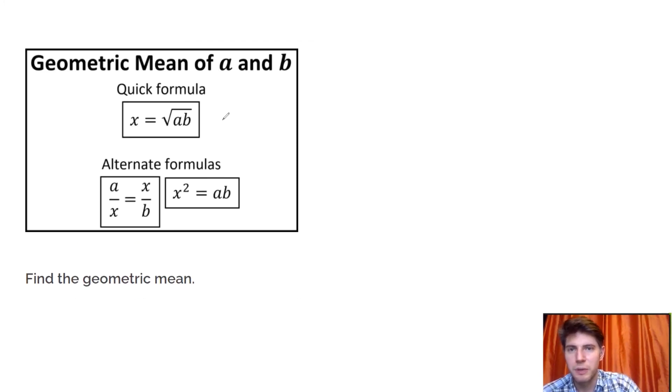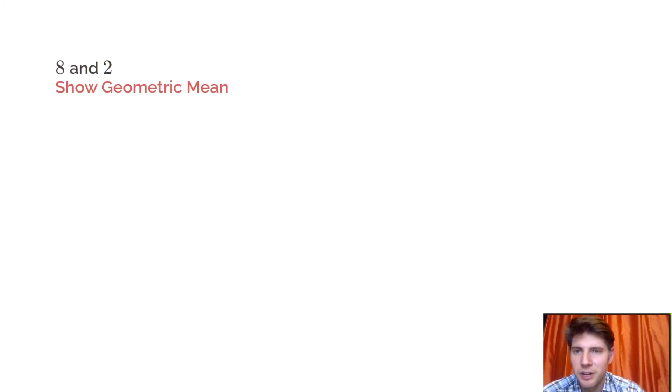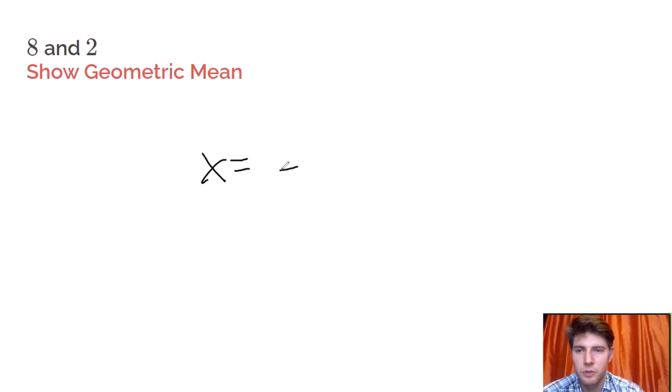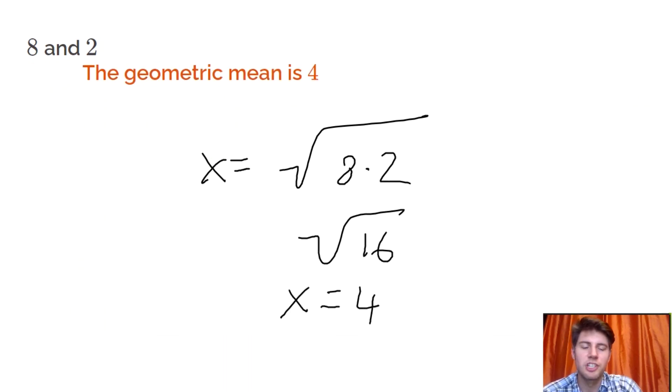We can do one more. So basically just remember square root of the two numbers multiplied. What's the geometric mean of 8 and 2? Well, we just say x equals the square root of 8 times 2. 8 times 2 is 16, and the square root of 16 is 4. 4 is the geometric mean of 8 and 2. That's it.